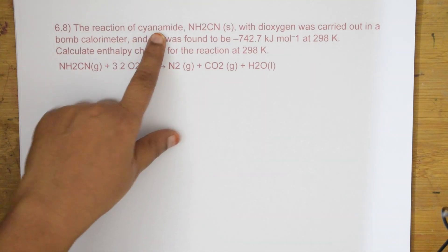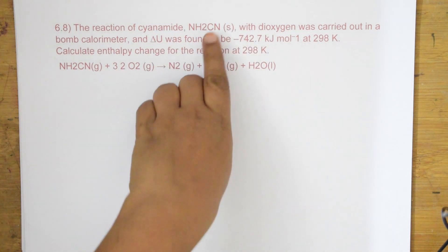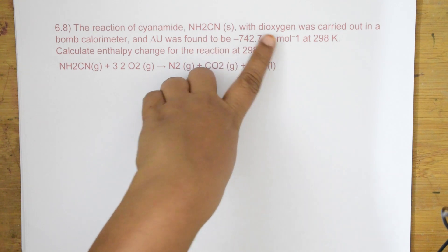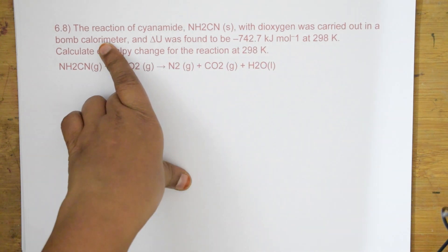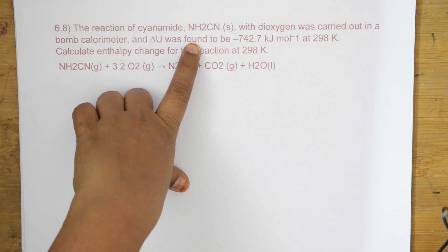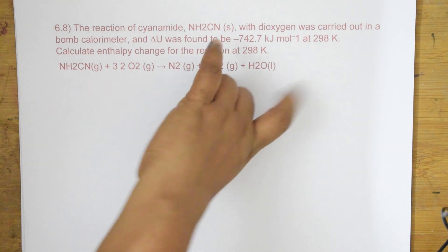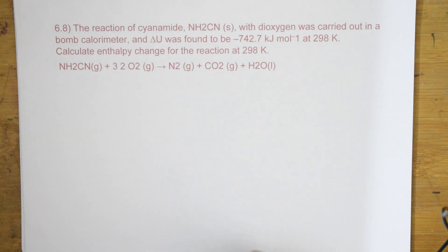Question 6.8: The reaction of cyanamide NH₂CN with dioxygen was carried out in a bomb calorimeter, and ΔU was found to be −742.7 kJ/mol at 298 K. Calculate the enthalpy change of the reaction at 298 K.